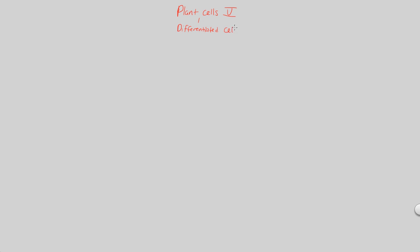Now that we've looked at the water-conducting cell side of the plant cell story, we're going to continue with Plant Cells 5, looking at differentiated cells that are very specialized in what they do. That specialization is sugar conducting, sugar transporting cells of the phloem. We're now moving to look at phloem as our type of vascular tissue — sugar-conducting cells. There are two major types to look at.